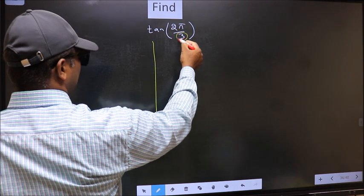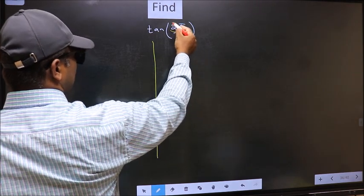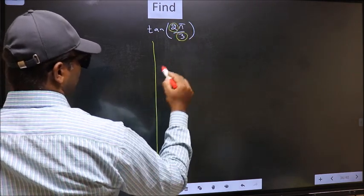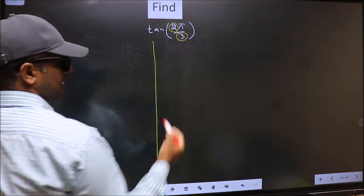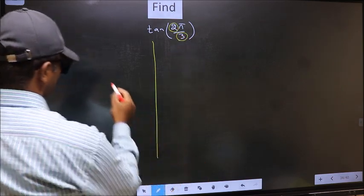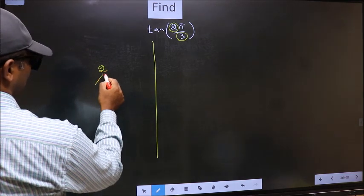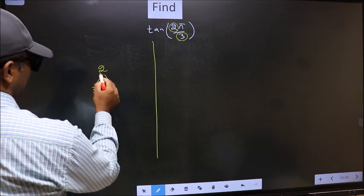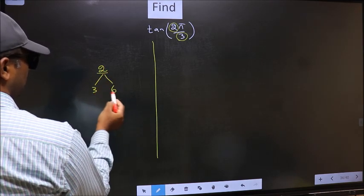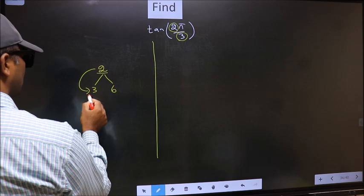In the denominator, we have 3. In the numerator, 2. Now you should check, 2 is close to which multiple of 3? And here you write multiples of 3, that is 3 and 6. So, 2 is close to which number? 2 is close to 3.